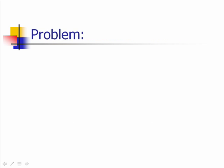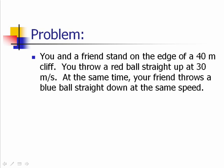Let's look at this in the context of a sample problem. Suppose you and a friend stand on the edge of a 40-meter cliff. You throw a red ball straight up at 30 meters per second. At the same time you throw the red ball, your friend throws a blue ball straight down the cliff at the same speed, 30 meters per second.